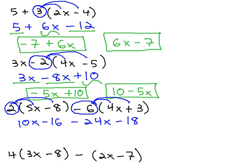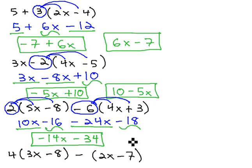Now, we can finish by combining like terms. 10x minus 24x is negative 14x, and negative 16 and negative 18 is negative 34. Again, the order of the terms doesn't matter, so you could have negative 34 minus 14x, and this would be the exact same thing.